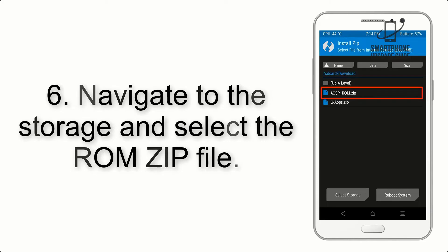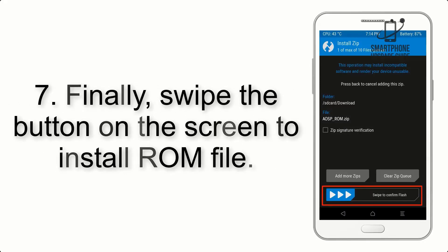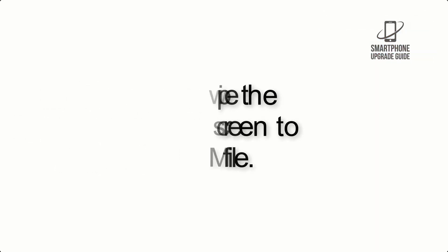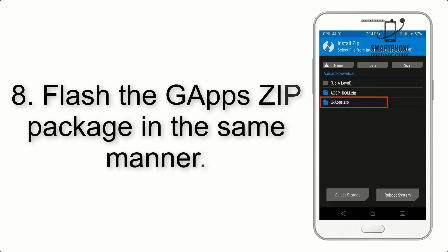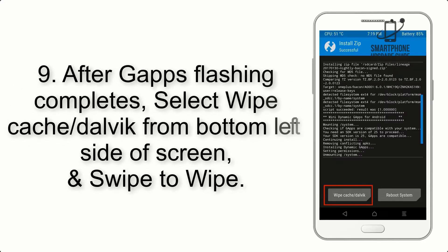Step 6: Navigate to the storage and select the ROM zip file. Step 7: Finally, swipe the button on the screen to install the ROM file. Step 8: Flash the GApps zip package in the same manner.